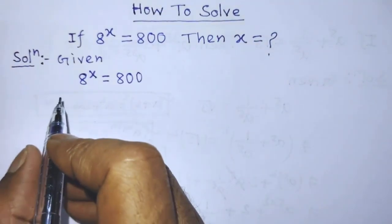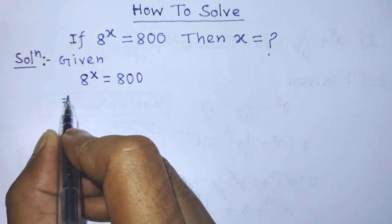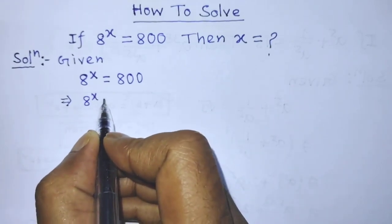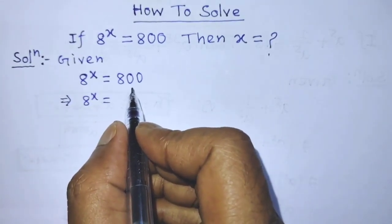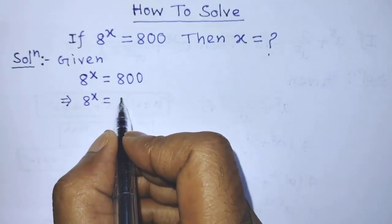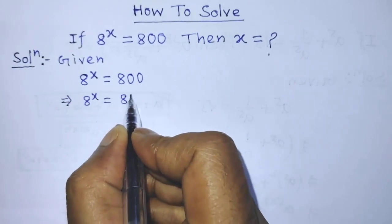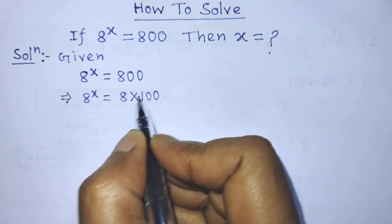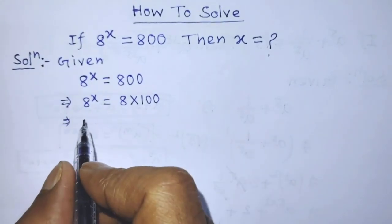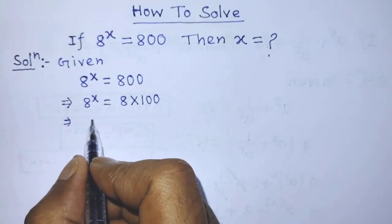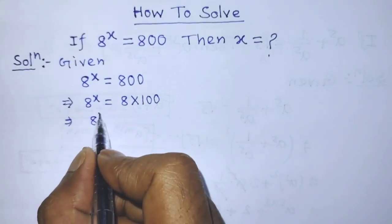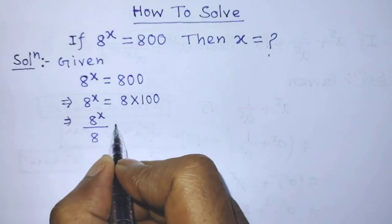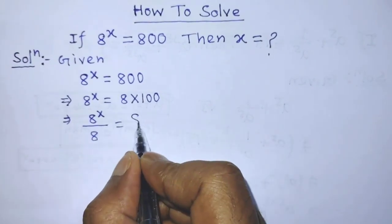From this equation, 8 to the power x is equal to — in place of 800 we can write 8 times 100. So after that, on the left hand side we have to write 8 to the power x over 8 is equal to 8 times...